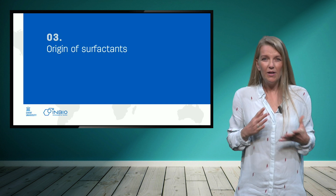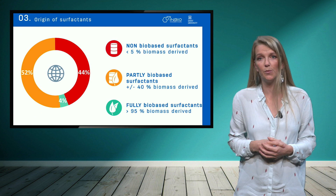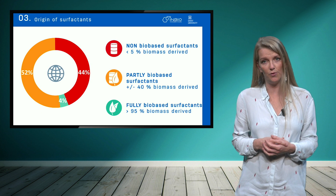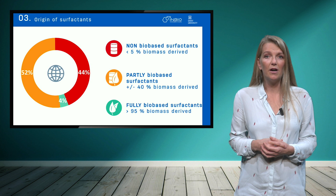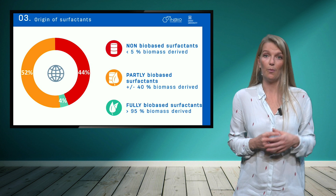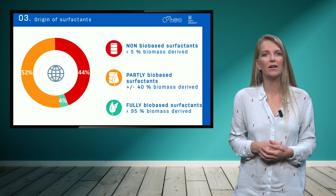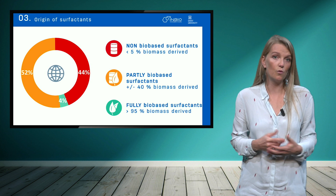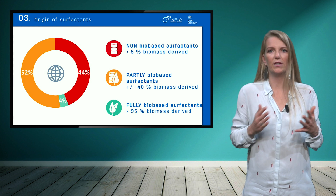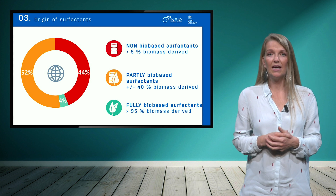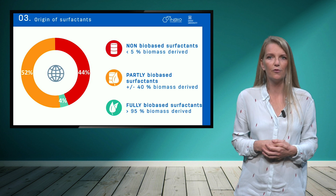Now, knowing surfactants are a very big market, you might wonder what they are actually produced from. Today, a bit less than half of the produced surfactants are fully derived from fossil resources — these are called non-biobased surfactants. More than half of the market are the so-called partly-biobased surfactants, which are partly derived from, for example, plants or animal fats. A last and small part of the market are the so-called fully-biobased surfactants, which are 100% bio-based. The fact that we speak about less than 5% and more than 95% rather than 0 and 100% is purely attributed to the error margin of the method to determine the origin of the carbon, done by so-called carbon-14 analysis.